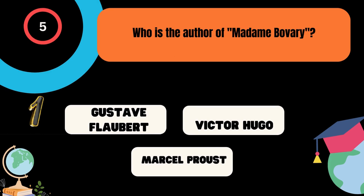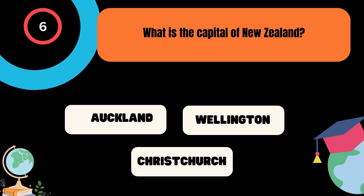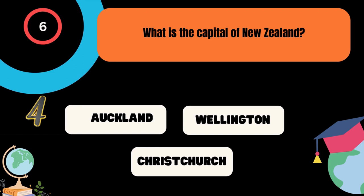What is the capital of New Zealand? A. Auckland, B. Wellington, C. Christchurch. And the correct answer is Wellington.